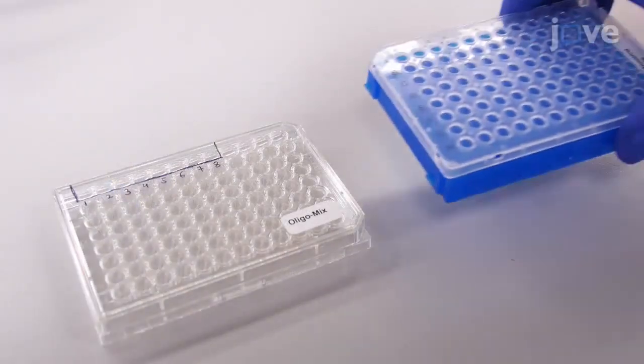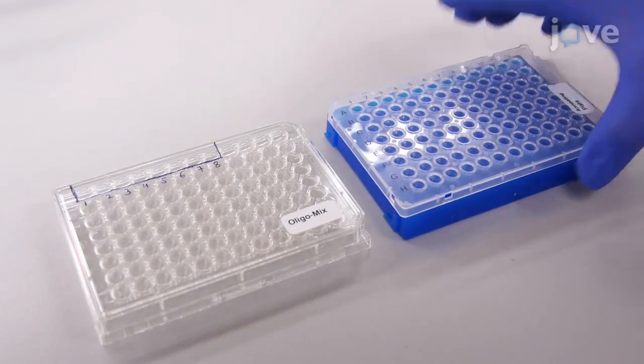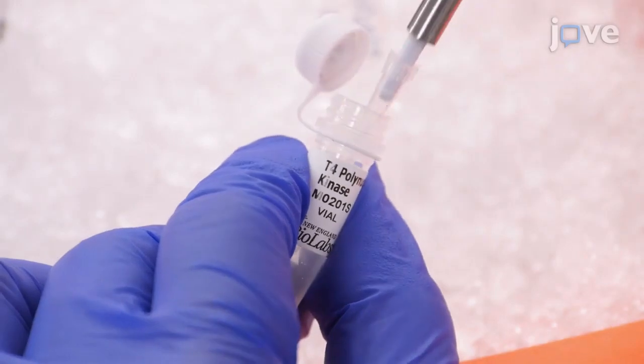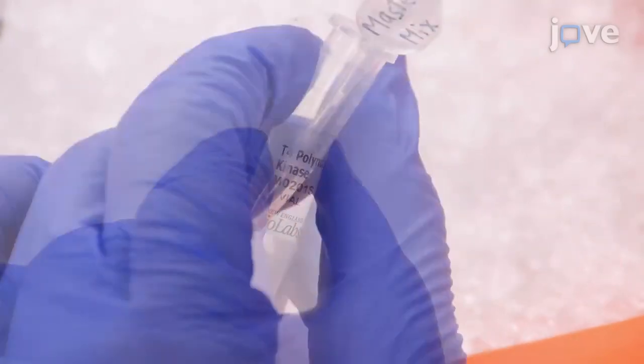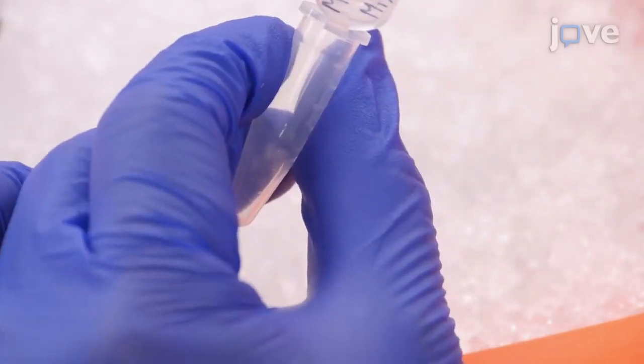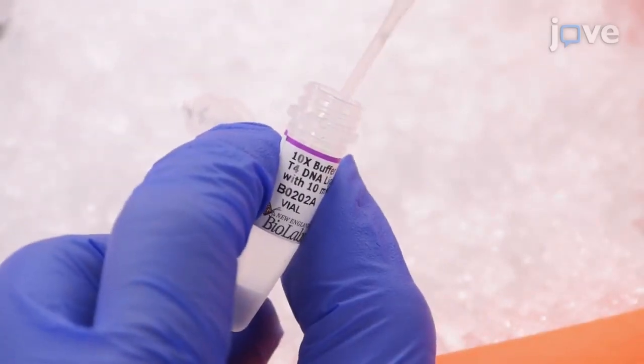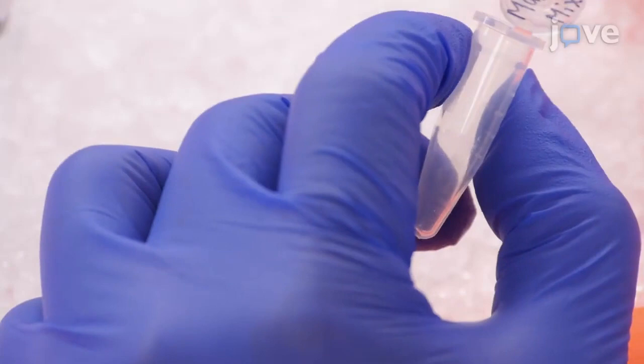Set out a separate U-bottom 96-well plate labeled annealing plate. Prepare a master mix of 1 µL of T4-polynucleotide kinase, 1 µL of 10X T4-DNA ligation buffer, and 6 µL of water per annealing reaction.